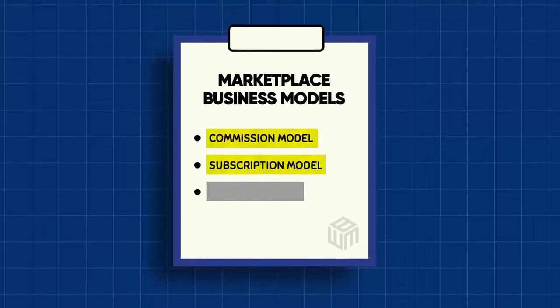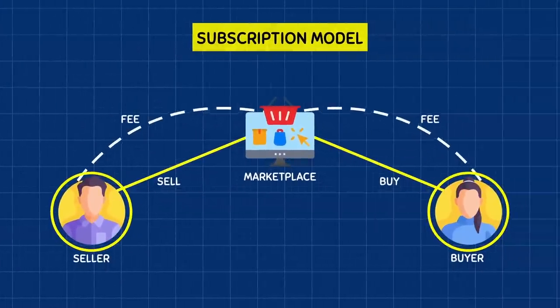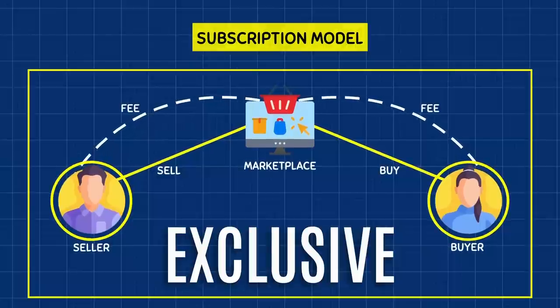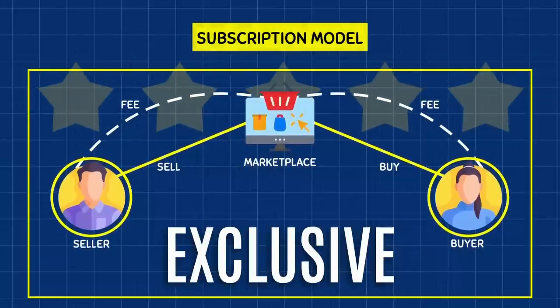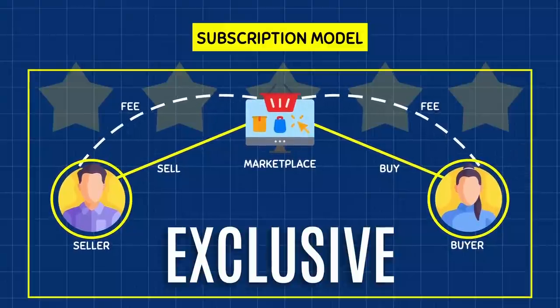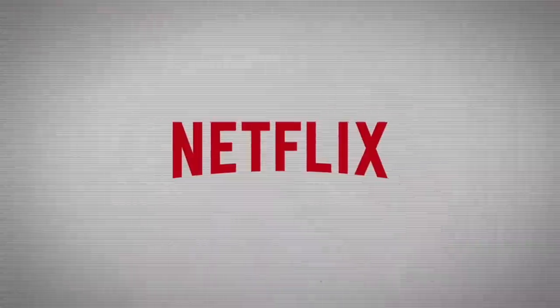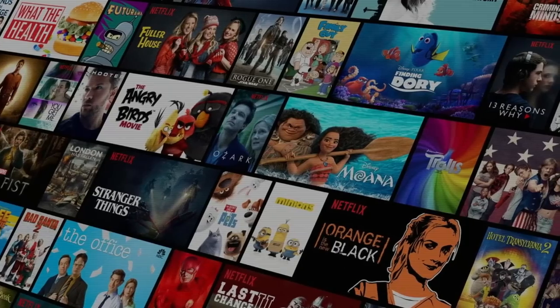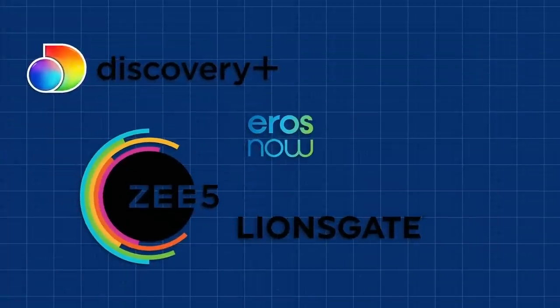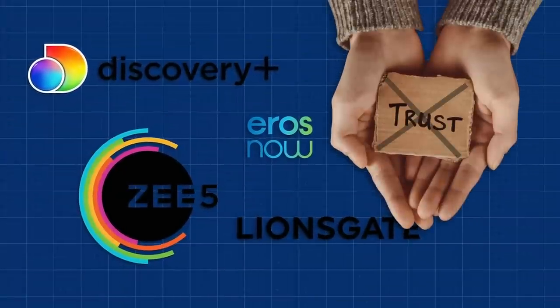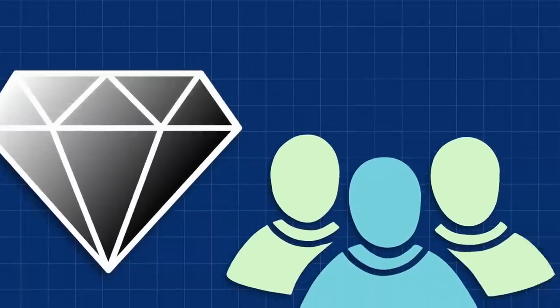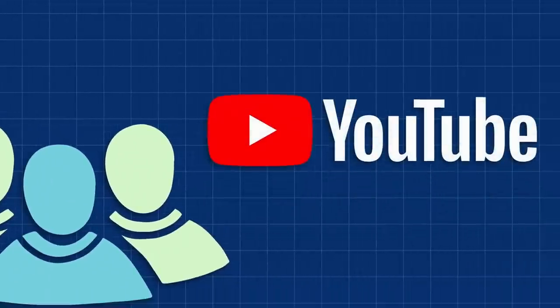Another revenue generator is called the subscription model, where either buyers or sellers or both are charged a recurring fee to access the marketplace, making it more exclusive. They're willing to pay the subscription because through it, they gain access to a higher quality experience. And also, sometimes it actually allows them to save money if they're a power user. Netflix uses this model where its users are charged a recurring fee to gain access to its entire library of movies and web series. This model doesn't always work, especially for new marketplaces, because they haven't built the trust required to justify a recurring payment.